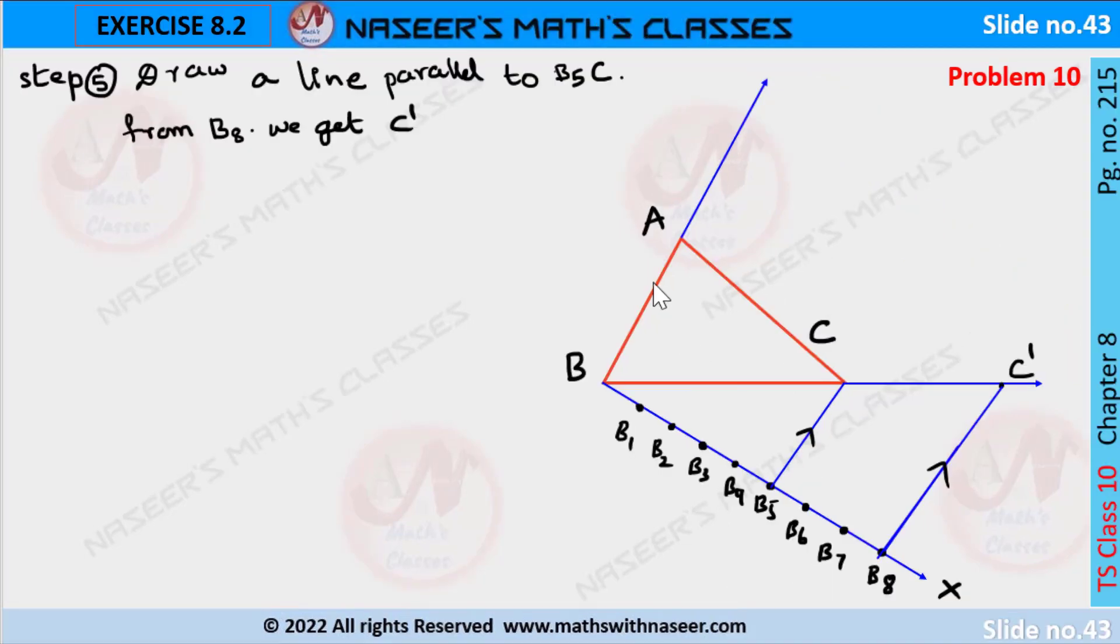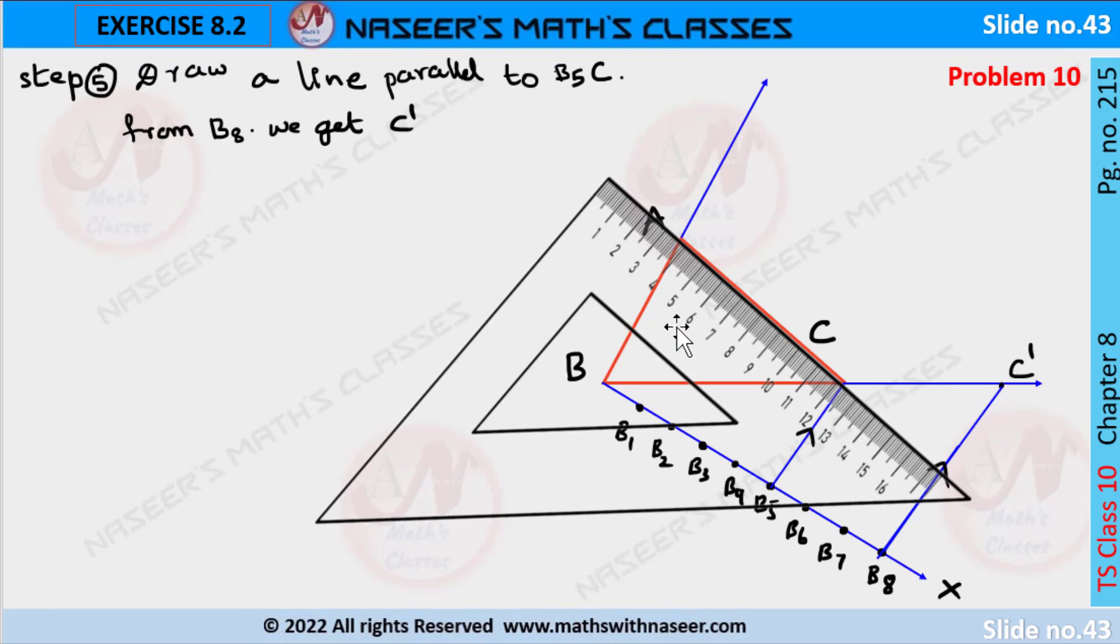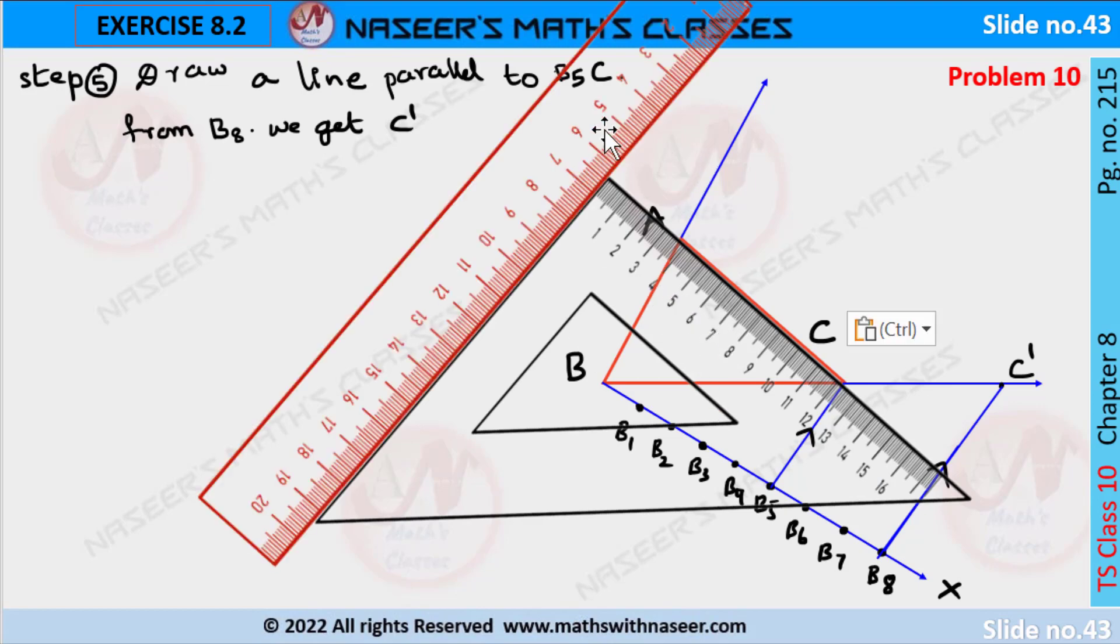Next we have to draw a line parallel to AC. Then we have to place a set square on AC as shown in the figure. After this, we have to place a scale which touches the set square.